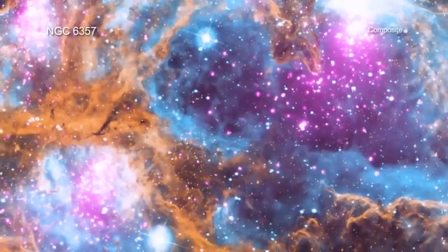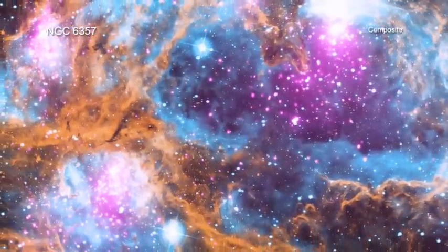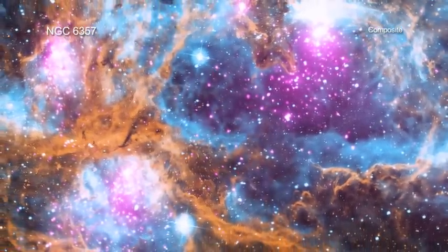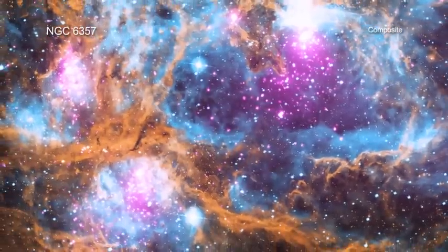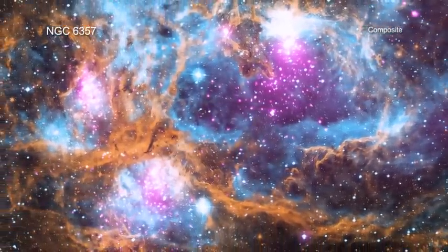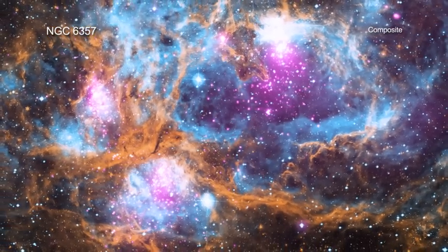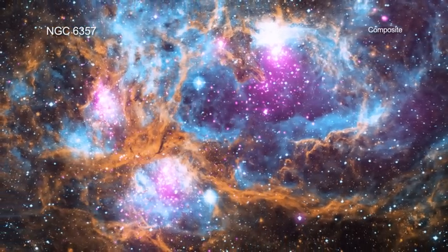Located about 5,500 light-years from Earth, NGC 6357 is actually a cluster of clusters, containing at least three clusters of young stars, including many hot, massive, luminous stars.